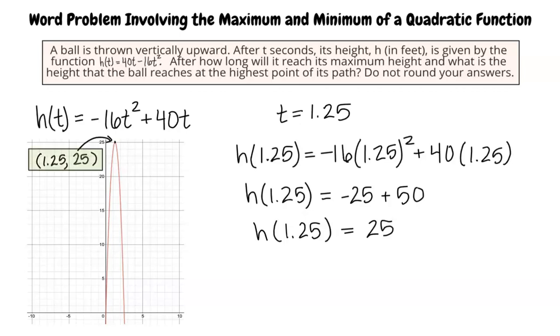Now we know that the vertex of our parabola is the point 1.25, 25. So the ball reaches its maximum height of 25 feet at 1.25 seconds after the ball is thrown in the air.